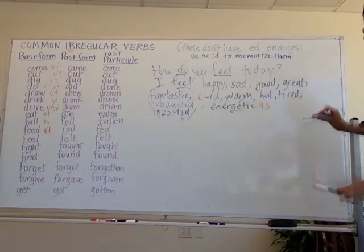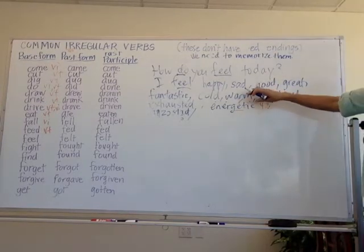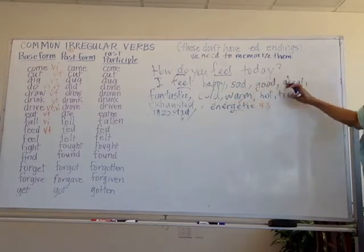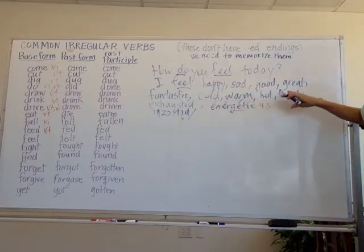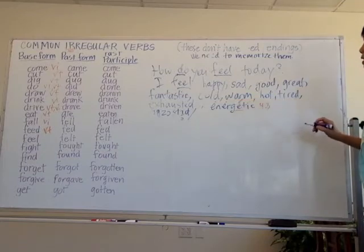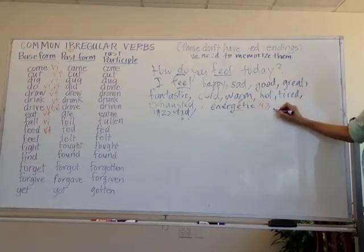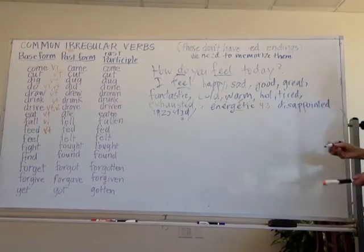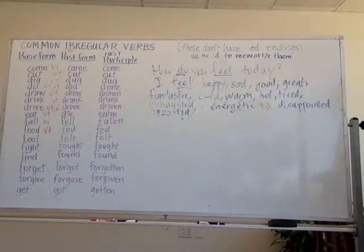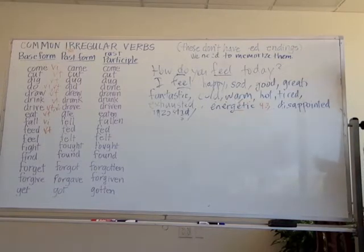So here are some feelings: happy, sad, good, great, fantastic, cold, warm, hot, tired, exhausted, energetic. How about this word — 'disappointed'? How many syllables does it have?